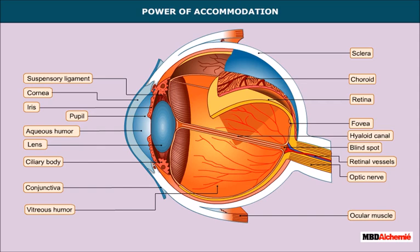The near point is 25 centimeters because the ciliary muscles stop contracting if the distance is less than 25 centimeters; in such a situation the object is not seen clearly. The far point is the maximum distance at which an object can be clearly seen. For a normal eye, the far point is infinity.